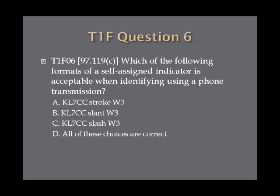Question six. Which of the following formats of a self-assigned indicator is acceptable when identifying using a phone transmission? A, KL7CC stroke W3. B, KL7CC slant W3. C, KL7CC slash W3. D, all of these choices are correct.